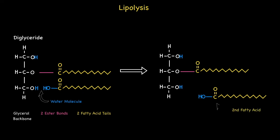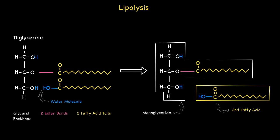Here is an illustration of the products of the second step. This step liberates a further fatty acid away from its parent glycerol backbone. In other words, the original diglyceride has lost one of its fatty acids to become a monoglyceride. The enzyme required for this second step is known as hormone-sensitive lipase.